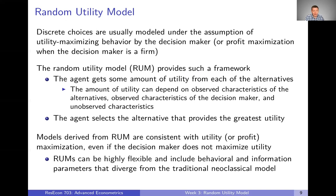It turns out that models derived from the random utility model are consistent with utility maximization, or profit maximization in the case of the firm, even if we don't think that the decision maker is actually maximizing utility. Maybe you think the decision maker is not a perfectly rational economic agent that can perfectly determine and maximize utility. Maybe there's some other heuristic they're using to make choices. Even so, when we use a random utility model, the choice is still going to be consistent with the concept of utility maximization.